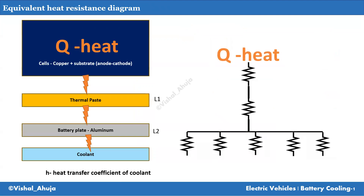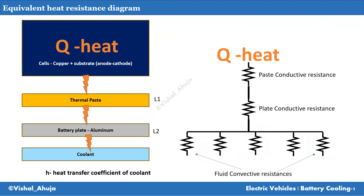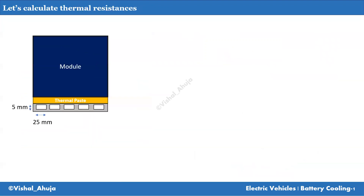If we make an equivalent heat resistance circuit diagram for this system, we understand that there is the thermal paste resistance, then the aluminum plate resistance, and apart from that there is a convective heat transfer resistance from the coolant side because it has to take away the heat. The conductive heat transfer resistance is defined by L/kA, and the convective heat transfer resistance is defined by 1/hA. Let's calculate them.